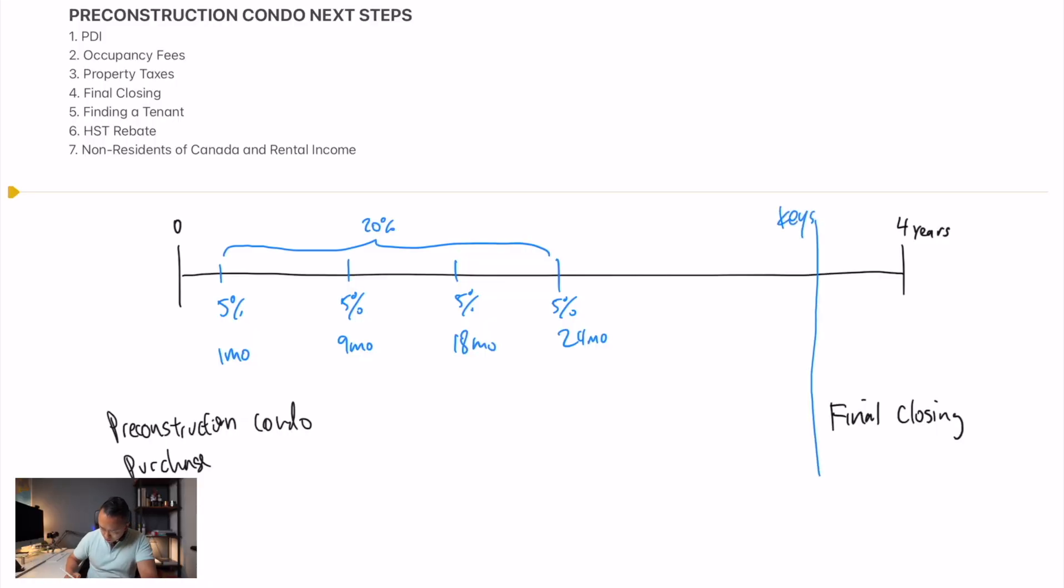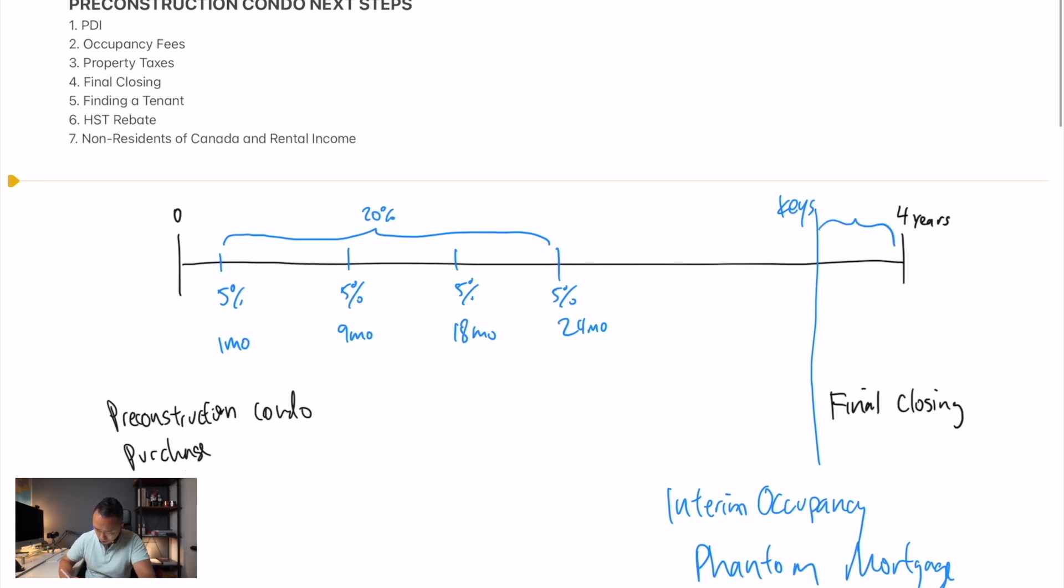Okay, so we're at this point here right now where you're going to get your keys and that's called the occupancy or the interim occupancy. And it's also the same time where you're going to, if you've heard the word phantom mortgage, because basically you're just paying rent to the developer during this time. So this is the rent period, let's call it. And I'm going to tell you, it's actually not a bad thing from what I've understood.